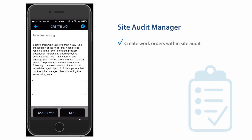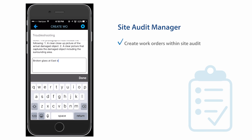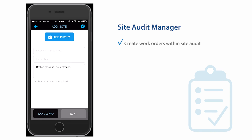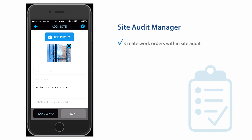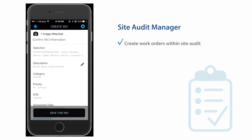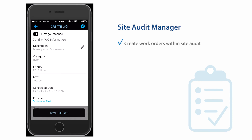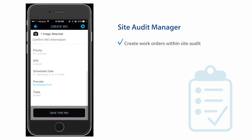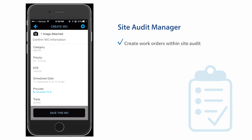Enter troubleshooting text if appropriate. Add photos for easy reference, your contact information, and a brief description of the problem. Review the summary, which indicates items like category, priority, not-to-exceed amount, schedule date, and provider. This information is generated automatically based on your custom configurations.